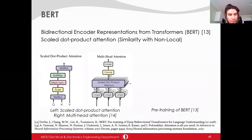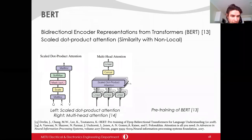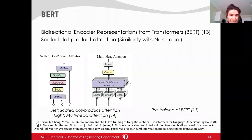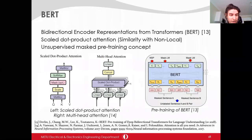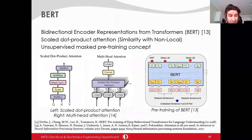BERT has become a popular concept in NLP tasks due to its success. Its main idea depends on the multi-head attention concept. The attention concept is very similar to non-local — the theta, phi, and g functions of non-local are realized with linear layers instead of convolutional layers. There is also a scale block which normalizes attention weights with input dimension. Multiple scaled dot-product attention units are utilized to learn multiple relations, which is called multi-head attention. BERT training includes an unsupervised pre-training step where masked words are guessed and the architecture estimates whether two selected sentences are adjacent. Then the pre-trained weights are utilized in related classification tasks.